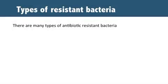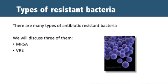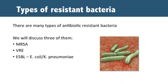There are many antibiotic-resistant strains of bacteria that can colonize or infect nursing home residents, but there are three that are most common: methicillin-resistant Staphylococcus aureus, or MRSA; vancomycin-resistant Enterococci, or VRE; and extended-spectrum beta-lactamase-producing E. coli, or ESBL E. coli.